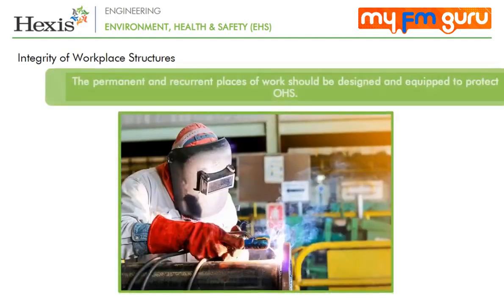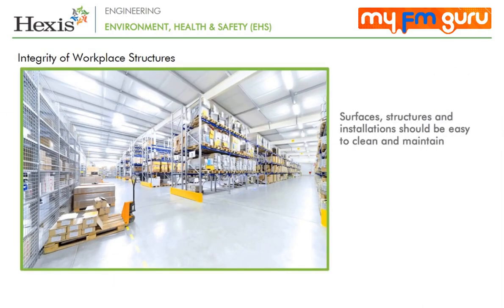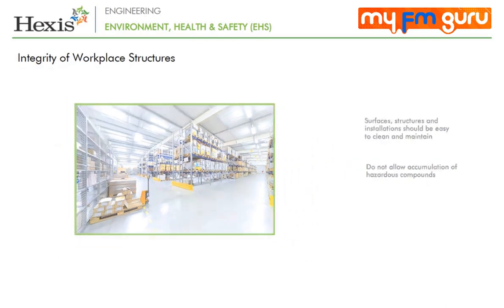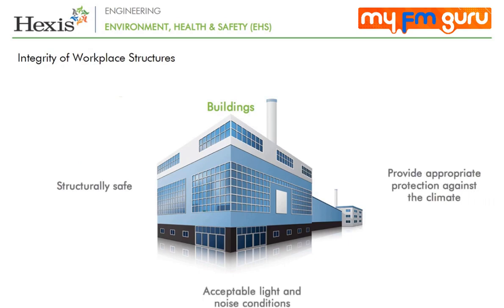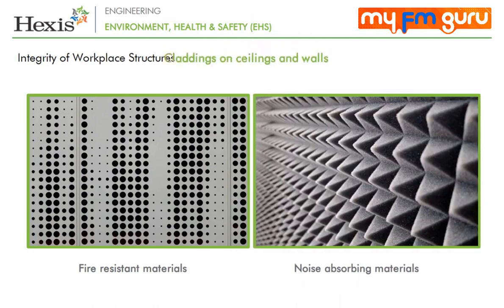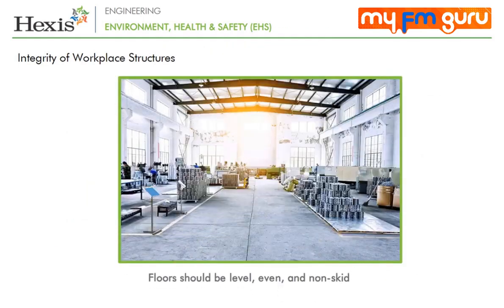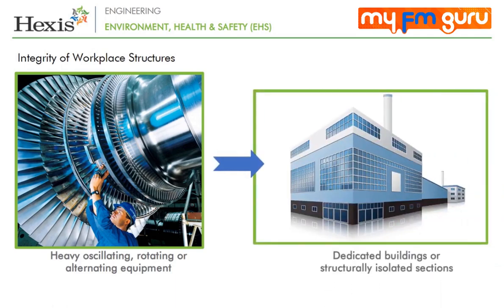Permanent and recurrent places of work should be properly designed and equipped to protect occupational health and safety. Surfaces, structures and installations should be easy to clean and maintain and should not allow accumulation of hazardous compounds. Buildings should be structurally safe, provide appropriate protection against the climate and have acceptable light and noise conditions. Fire-resistant and noise-absorbing materials should be used for cladding on ceilings and walls. Floors should be level, even and non-skid. Heavy oscillating, rotating or alternating equipment should be located in dedicated buildings or structurally isolated sections.